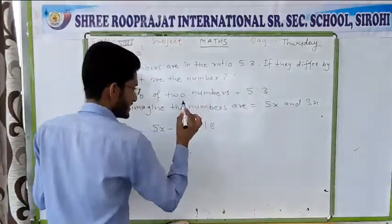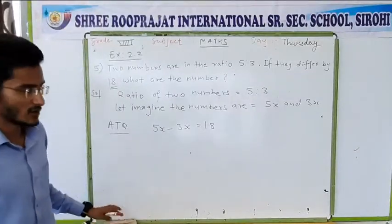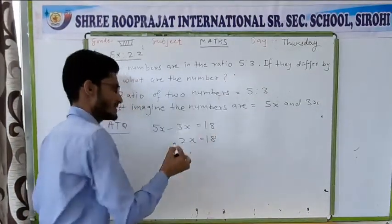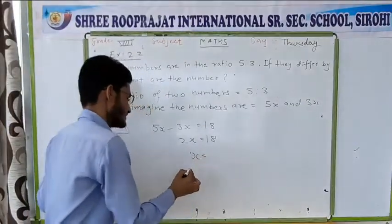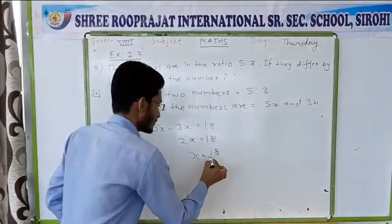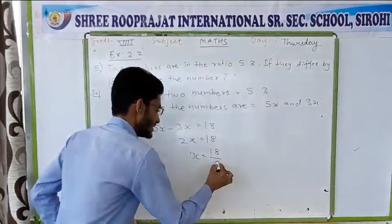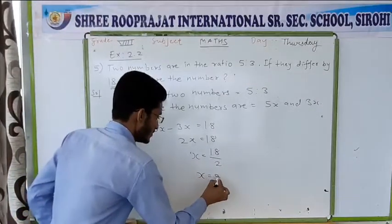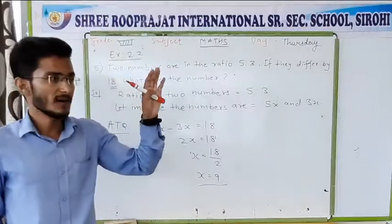So 5x minus 3x is equal to 18. Now 5x minus 3x is equal to 2x. So 2x equals 18. To find the value of x, we remove the 2 from the left-hand side — it becomes a divisor on the right-hand side. So 18 divided by 2 gives x equal to 9.